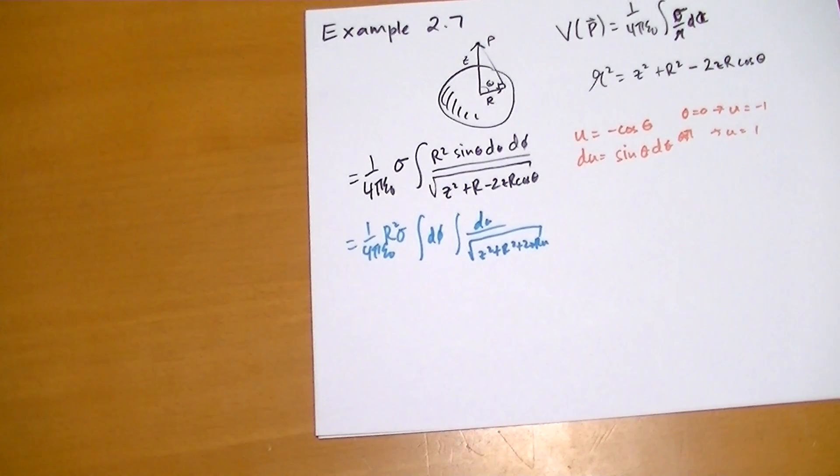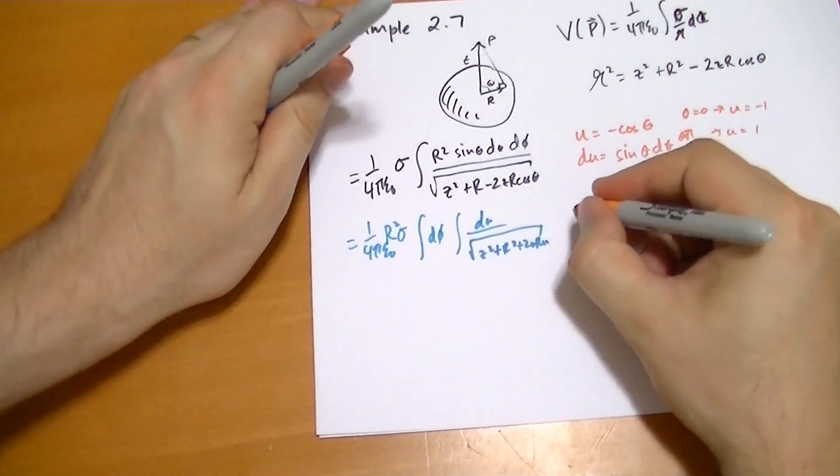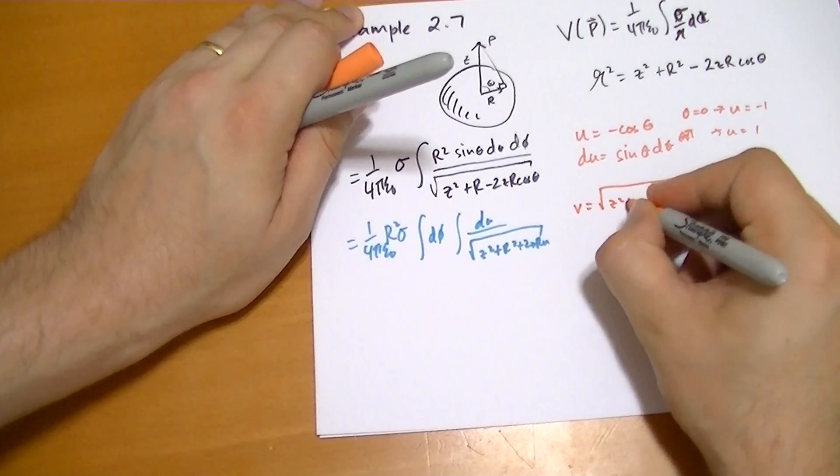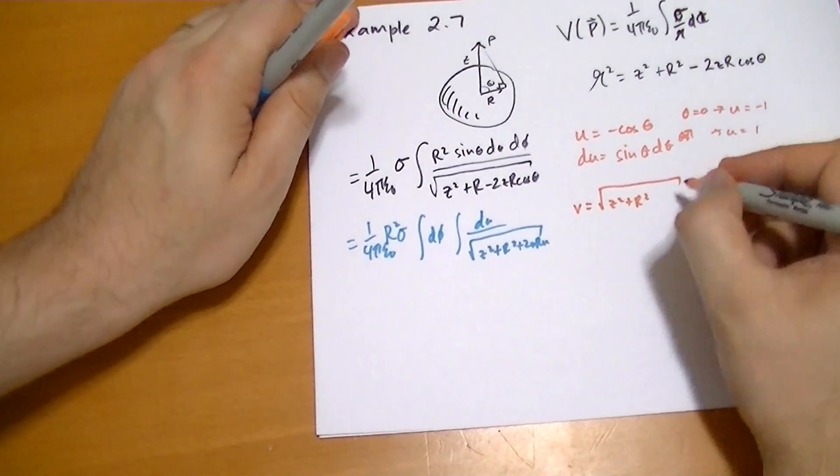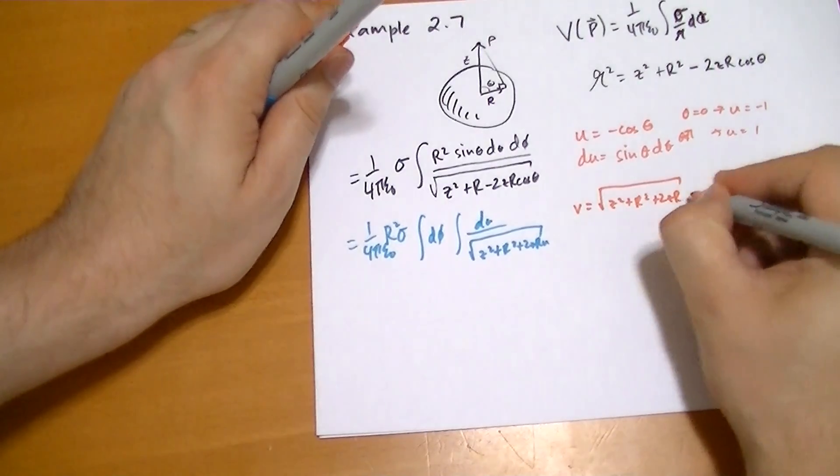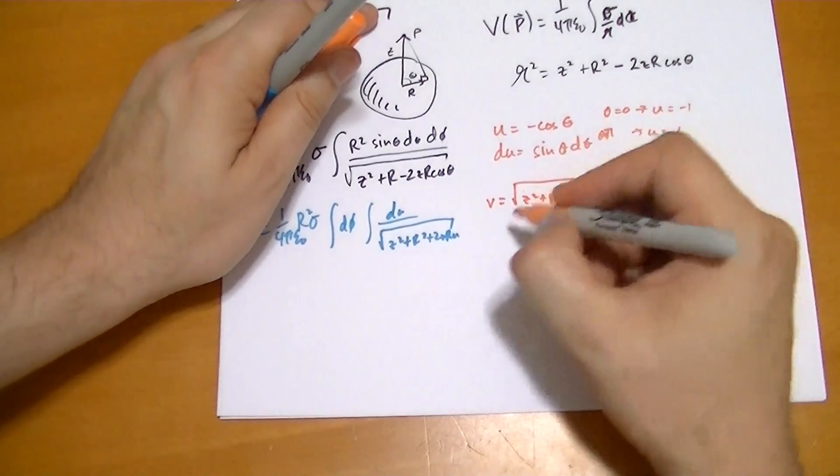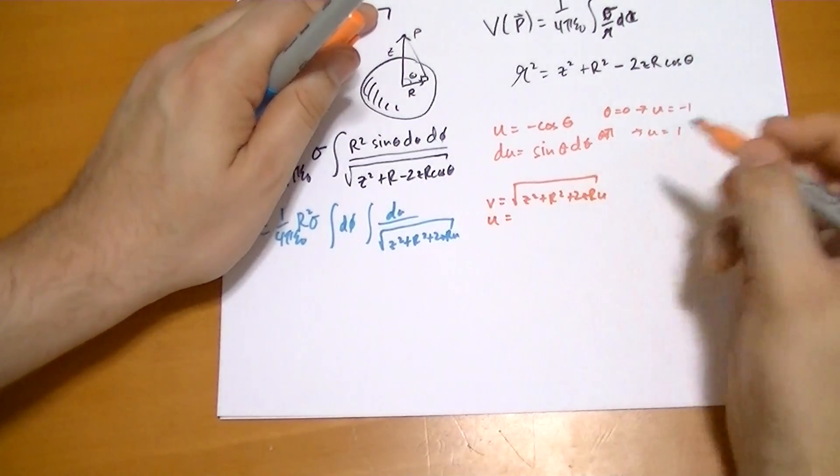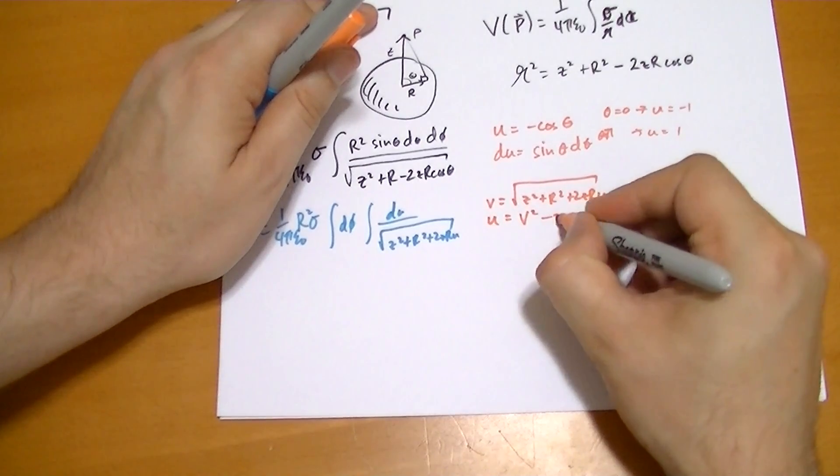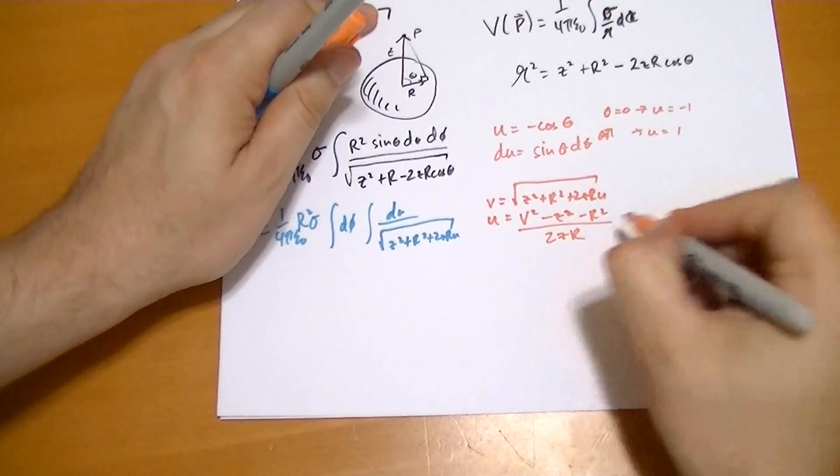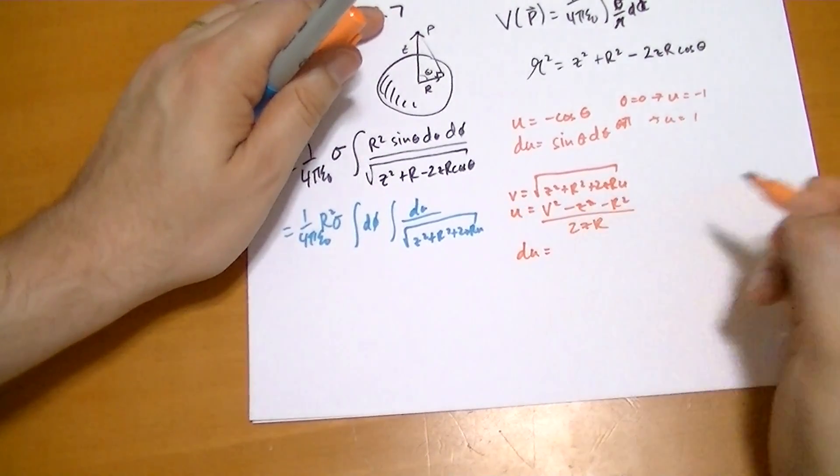And so solving for that integral, we can do another substitution here. Let's do v equals the square root of z squared plus r squared plus 2zru. So that means u is equal to v squared minus z squared minus r squared all over 2 z r.